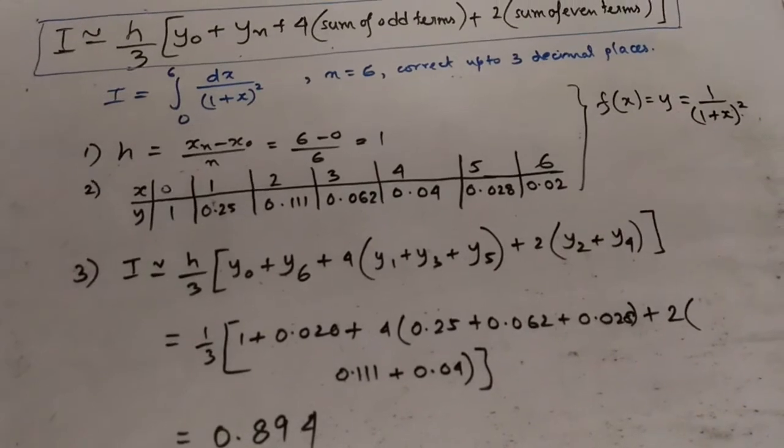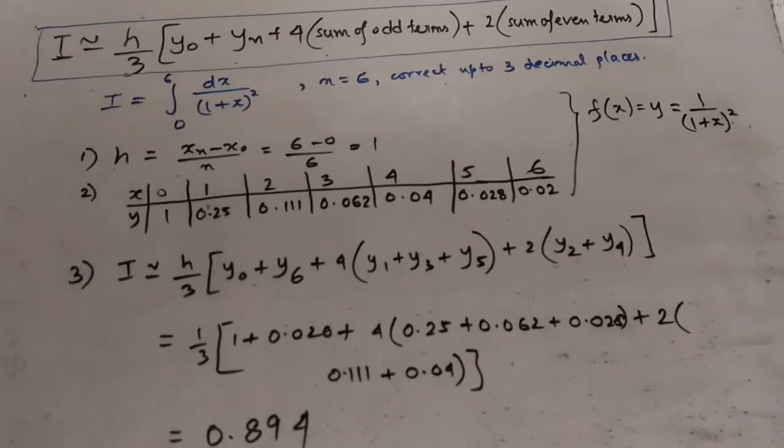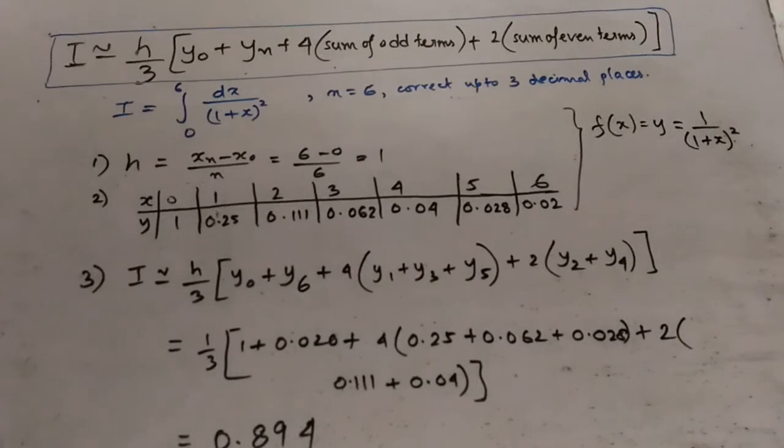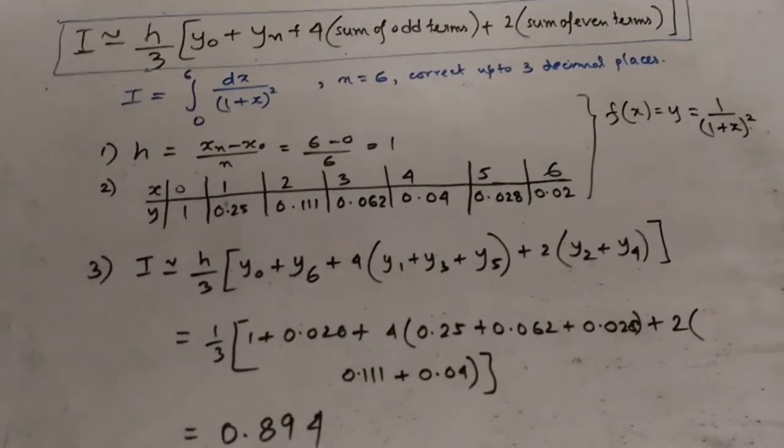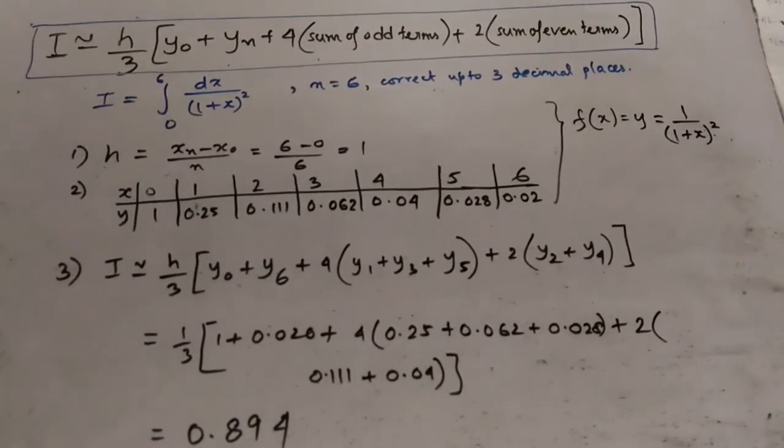So our integration from 0 to 6 of dx/(1+x)² up to 3 decimal places is approximately equal to 0.894.